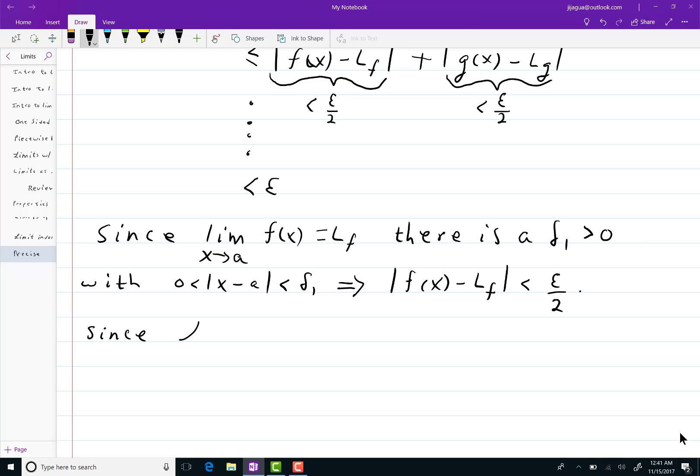Similarly, since the limit as x goes to a of g of x equals l sub g, there is a delta 2 greater than 0 with 0 less than the absolute value of x minus a less than delta 2,